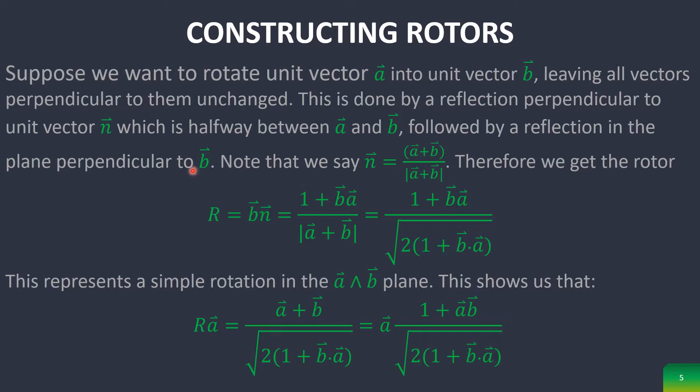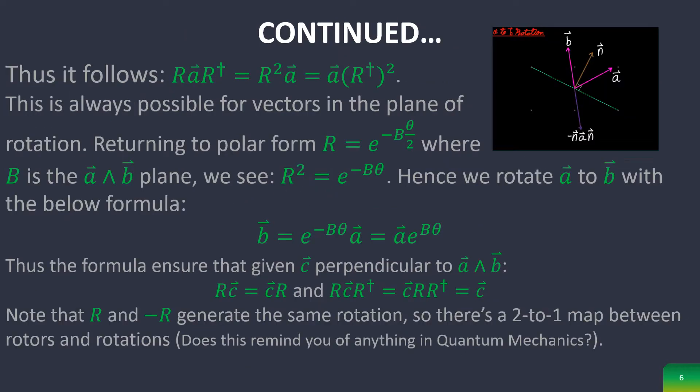This defines this rotor which creates a simple rotation in the A∧B plane. It thus follows that this equation holds, which is always possible for vectors in the plane of rotation. If we return to polar form we can express this just as an exponential times a vector.